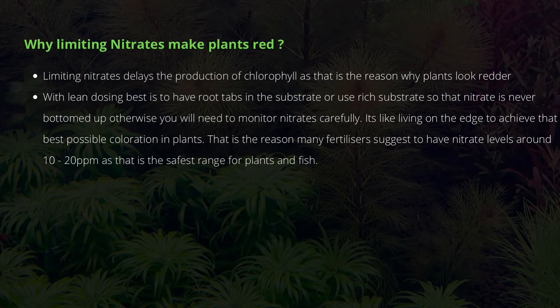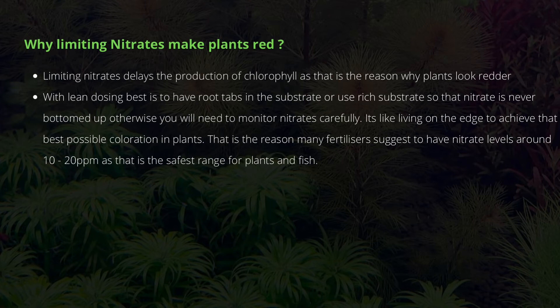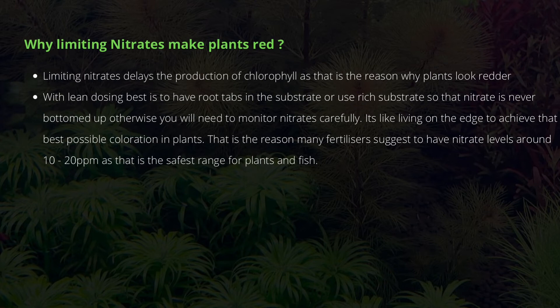So why does limiting nitrates make plants red? Nitrogen is essential for manufacturing chlorophyll. When we limit nitrates, nitrogen is restricted, which delays chlorophyll production — the green pigment — and plants that used to look yellowish-green will start looking more orange or red. This is exactly what lean dosing achieves. However, make sure you monitor your nitrates carefully, because it's living on the edge — you risk dropping levels too low and causing deficiency, which is why most fertilizing companies still recommend 10 to 20 ppm.